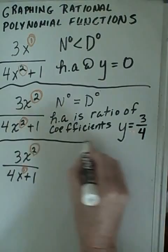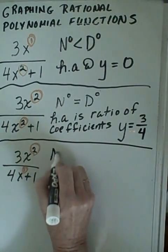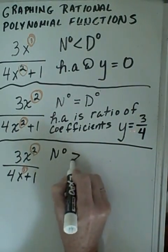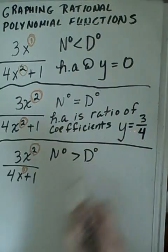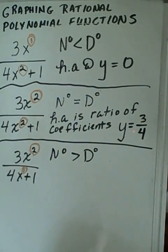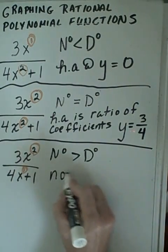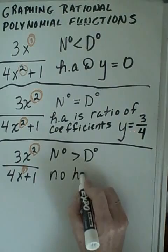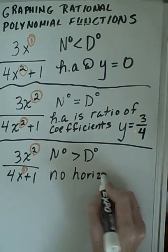Finally, we get our third example here, where the degree of our numerator is greater than our degree of our denominator. And in this case, there is no horizontal asymptote.